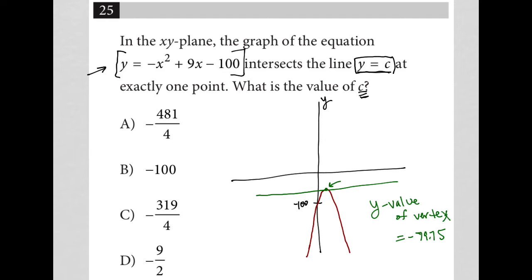Of course, our answer choices here are in fraction form, but we can tell immediately that b and d are not the correct answer. I'm going to try choice a to start off and see if negative 481 divided by 4 is equal to negative 79.75, and that's not true. This ends up being negative like 120.25, which is not what we want.